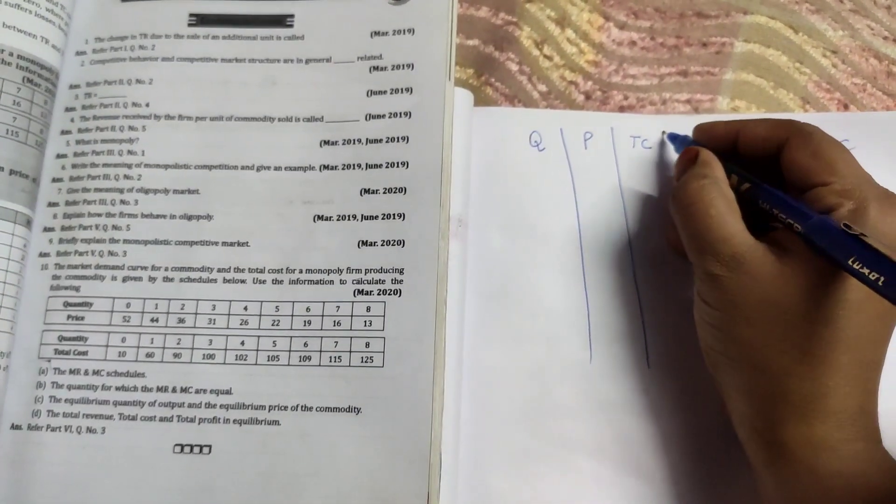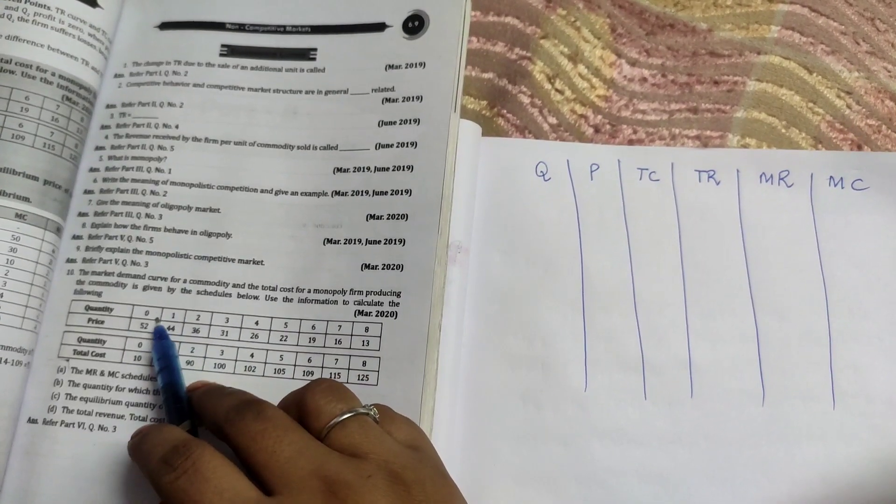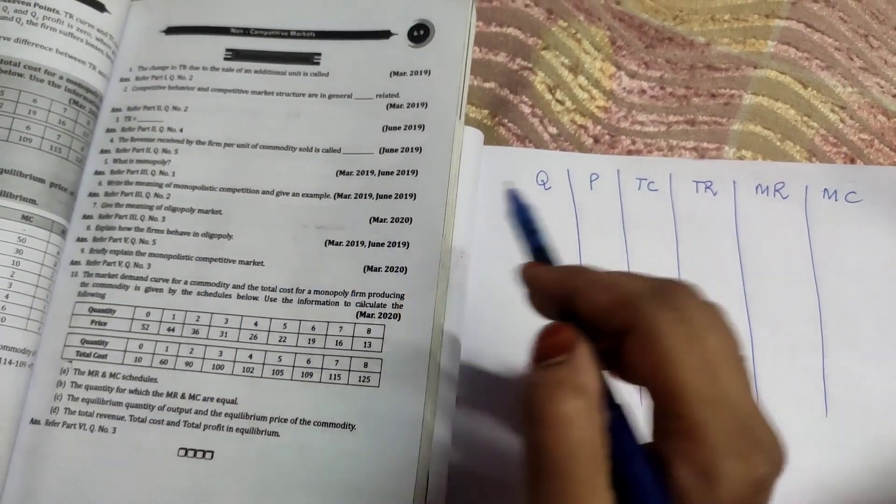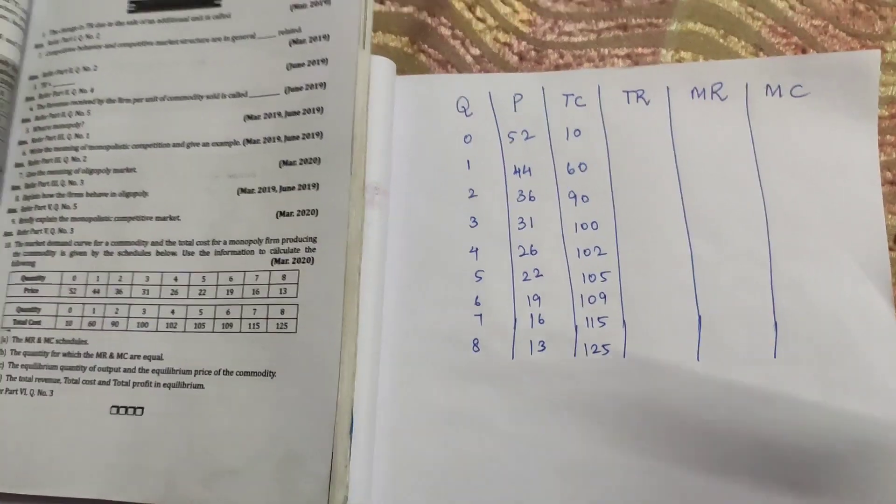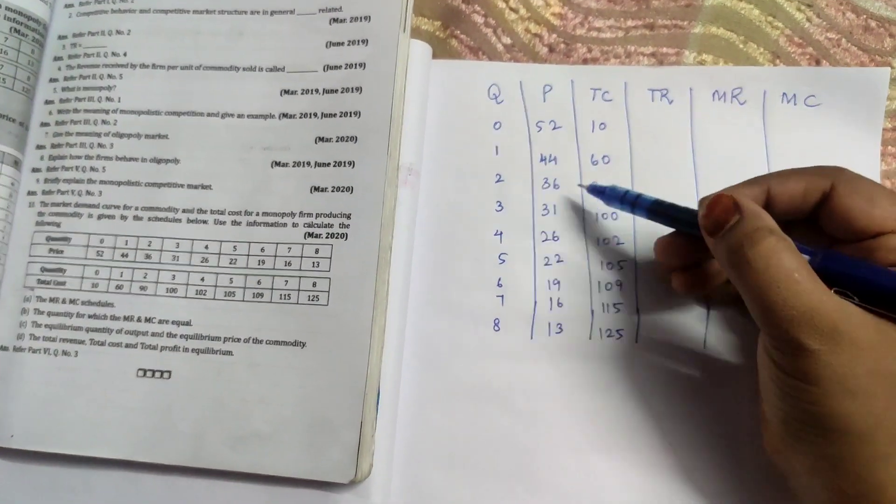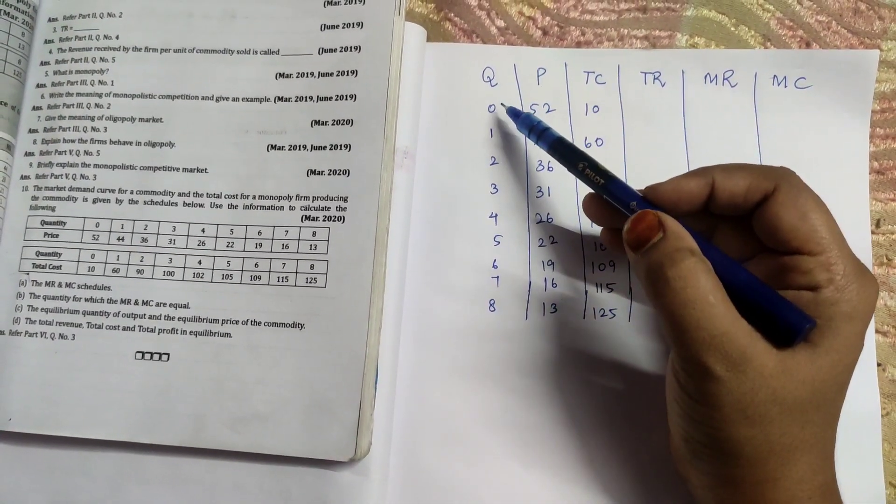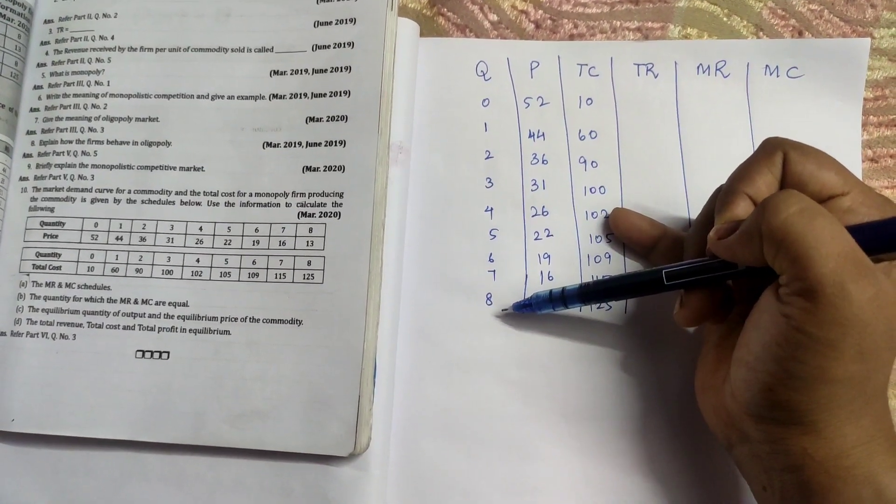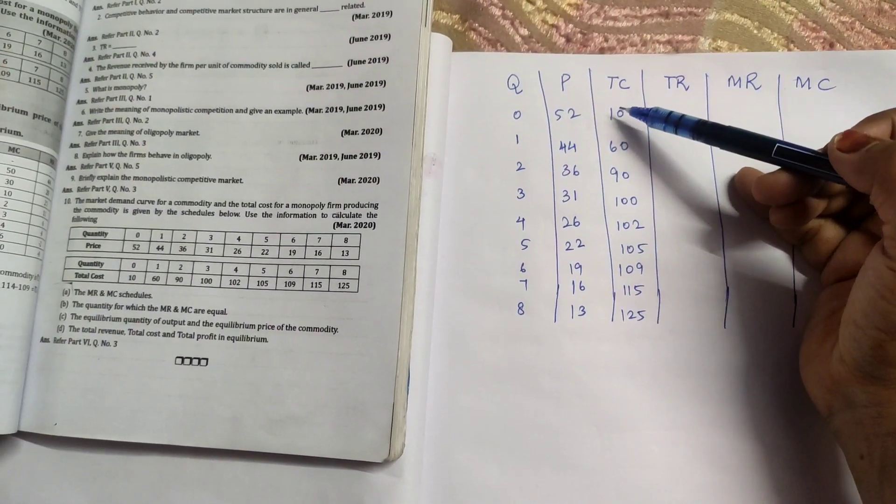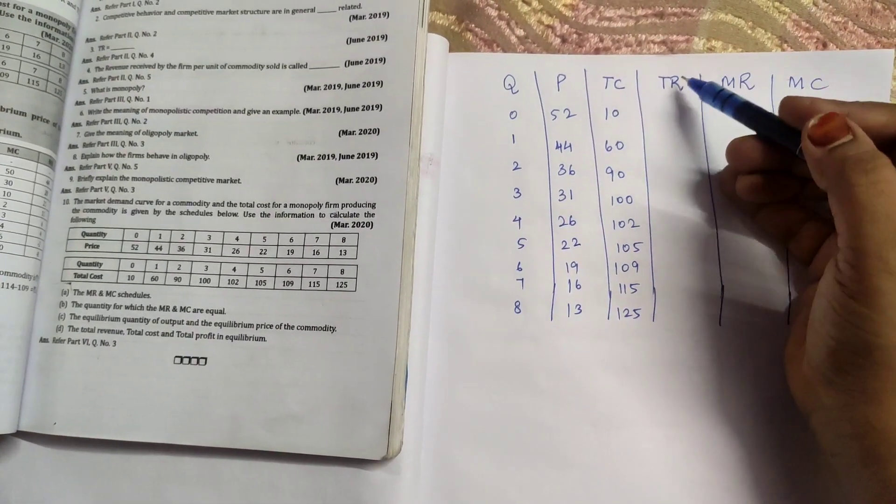So based on this, we will make a line then for the question. As it is, we will write down the quantity, price, and total cost. As it is we will write down from the question. As it is we have written down the quantity, price, and total cost. Here you can see when the price is high, the quantity demand is less. When the price is less, the quantity demand is high.